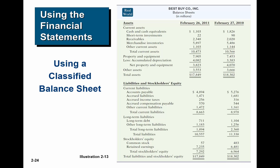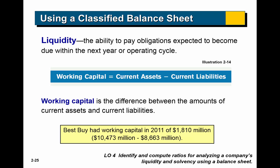Here's the classified balance sheet again for Best Buy Inc. You can see the assets broken into current assets and property, plant, and equipment — there are no intangibles on this one — and the liabilities broken into current liabilities and long-term liabilities, plus stockholders' equity.